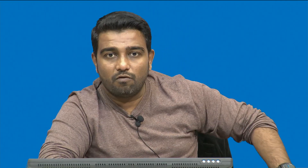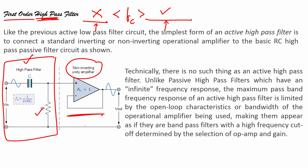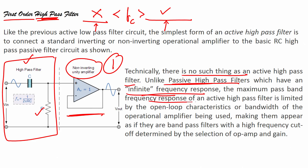Like the previous active low pass filter, the simplest form of active high pass filter is to connect a standard inverting or non-inverting operational amplifier to a basic RC high pass passive filter. Technically, unlike a passive high pass filter which has an infinite frequency response, the maximum pass band frequency of an active high pass filter is limited by the open-loop characteristics or bandwidth of the op-amp being used.